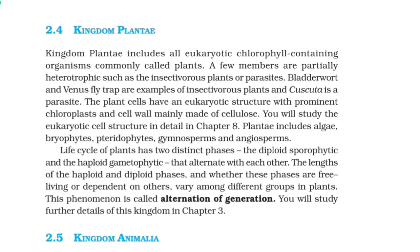2.4 Kingdom Plantae. Kingdom Plantae includes all eukaryotic chlorophyll-containing organisms, commonly called plants. A few members are partially heterotrophic, such as the insectivorous plants or parasites. Bladderwort and Venus flytrap are examples of insectivorous plants, and Cuscuta is a parasite. The plant cells have a eukaryotic structure with prominent chloroplasts and cell walls mainly made up of cellulose. Plantae includes algae, bryophyta, pteridophyta, gymnosperms, and angiosperms. The life cycle of plants has two distinct phases — the diploid sporophytic and the haploid gametophytic — that alternate with each other. This phenomenon is called alternation of generations. We will study further details of this kingdom in Chapter 3.